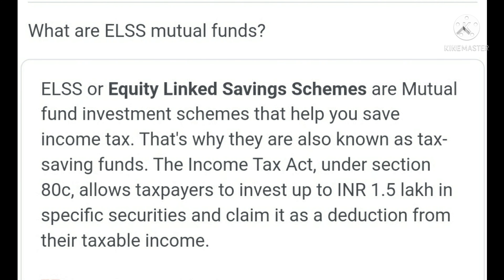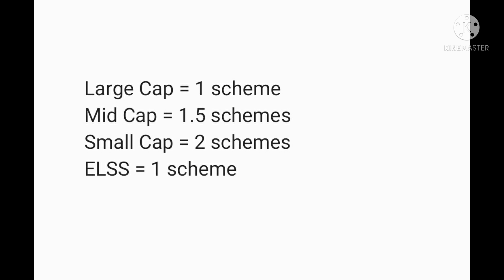Next we will see ELSS mutual funds — ELSS means Equity Linked Savings Schemes. This is the best tax saving tool because it has only a 3-year lock-in period, which is the minimum compared to other tax saving tools, and the returns are also good. You can select any one good ELSS mutual fund scheme that has a minimum expense ratio.